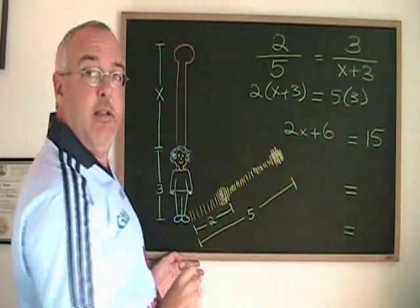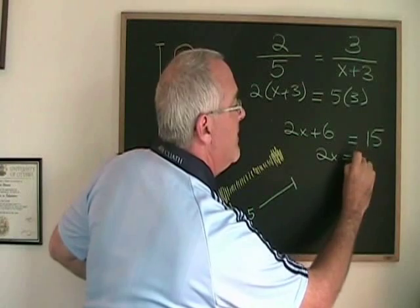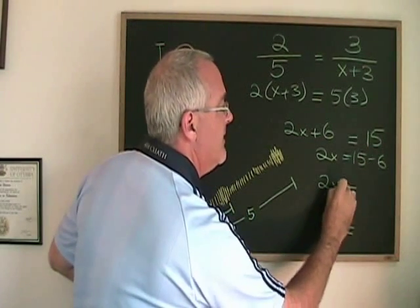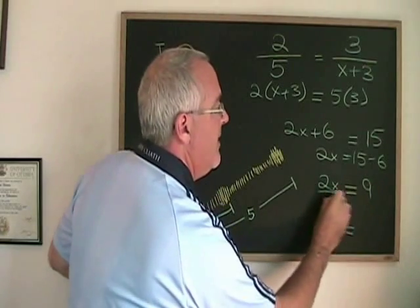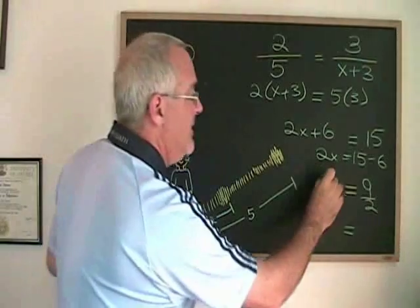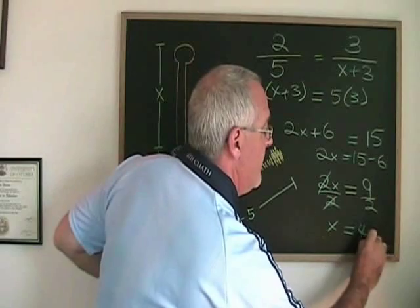If I move the six to the other side, I end up with two x equals 15 minus six, and therefore two x equals nine. Finally, if I divide both sides by two, I can isolate my x, and x is equal to nine divided by two, which is 4.5.